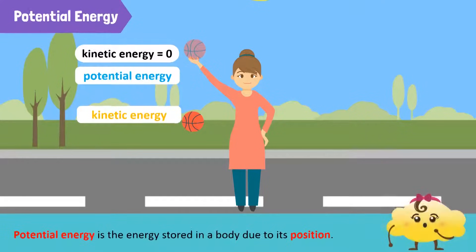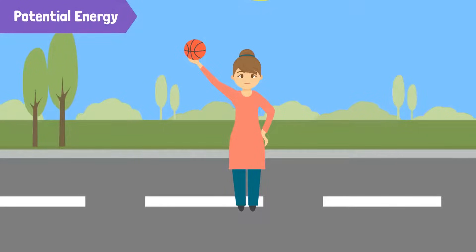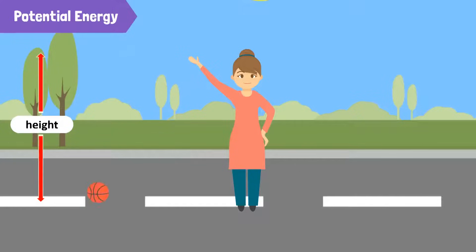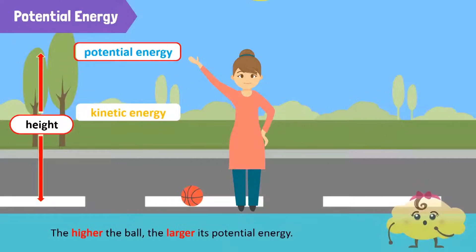This energy which is stored in the ball is called potential energy. Potential energy is a form of energy stored in a body due to its position. Here, the position is the ball's height from the ground. When you release it, the potential energy converts to kinetic energy. In fact, the higher the ball, the larger its potential energy.